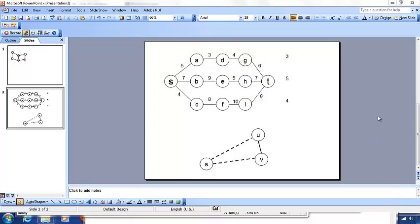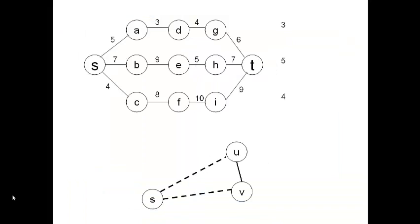Let's start with the bottleneck bandwidth problem and motivating examples. From a source to a terminal destination, you want to send data on the path that has the largest bottleneck bandwidth. If you take a path from S, A, D, G to T, each of these links has a bandwidth — for example, 5 megabits per second, 3 megabits per second, 4 megabits per second, and so on.